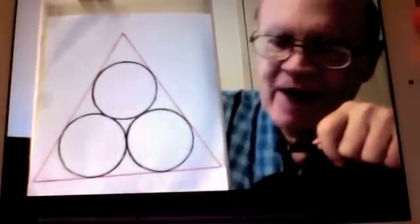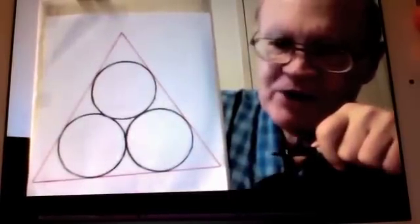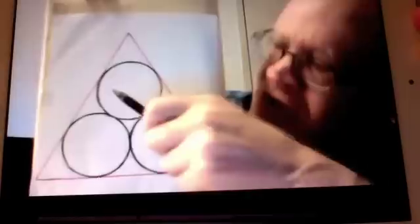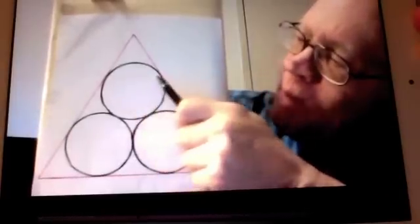And surrounding them we have this triangle, which is tangent to the circles at these six points.